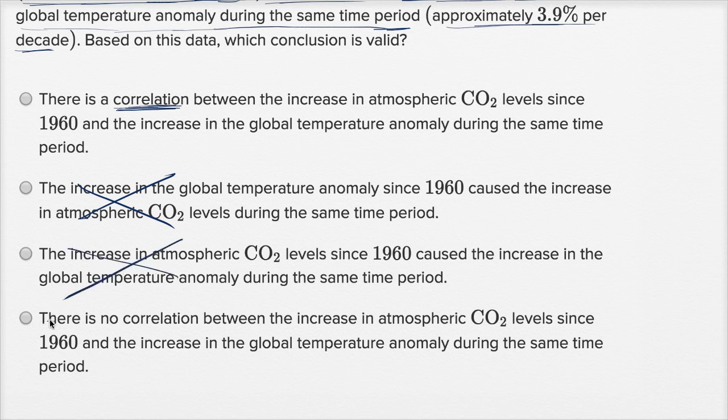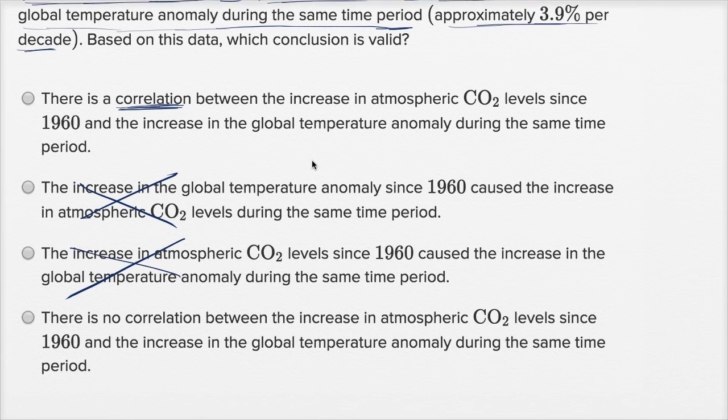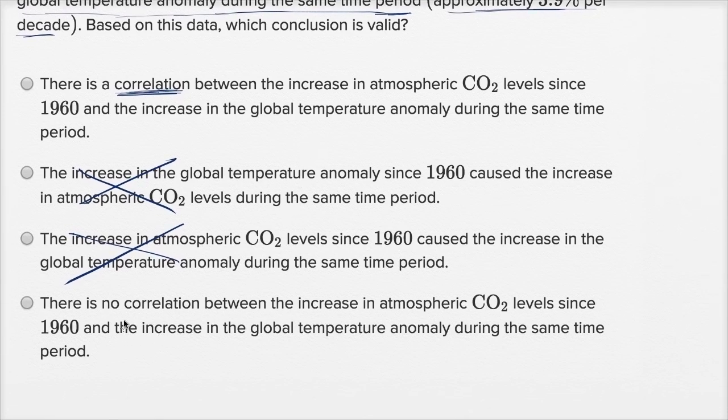So you can't say that just based on the data that we have, the fact that they both increased at roughly 4% per decade since 1960, you can't say that one caused the other. There is no correlation between the increase in atmospheric CO2 levels since 1960 and the increase in global temperature anomaly during the same time period. No, there for sure is a correlation.